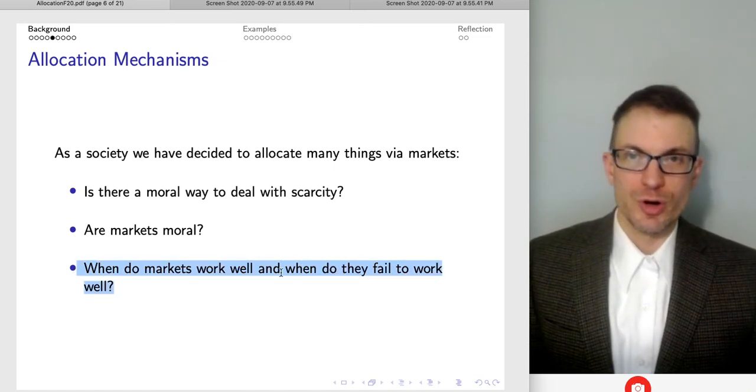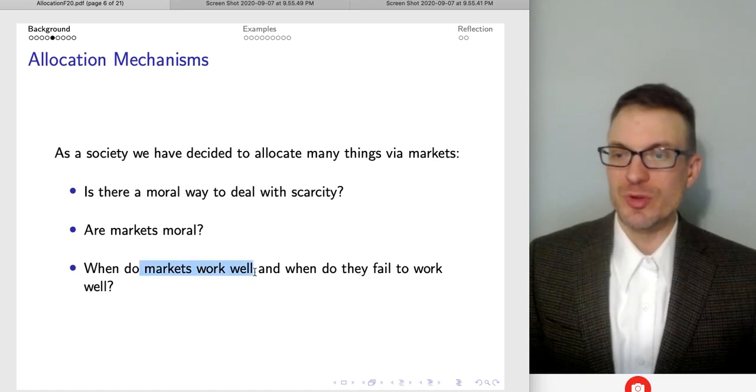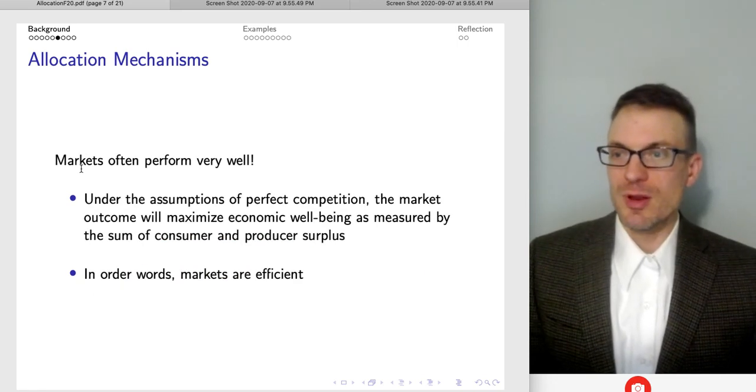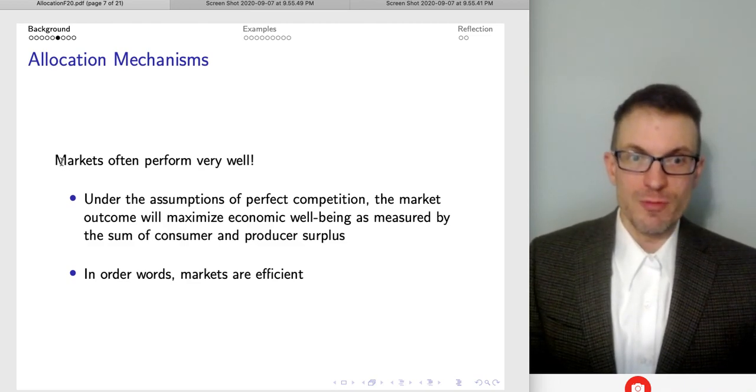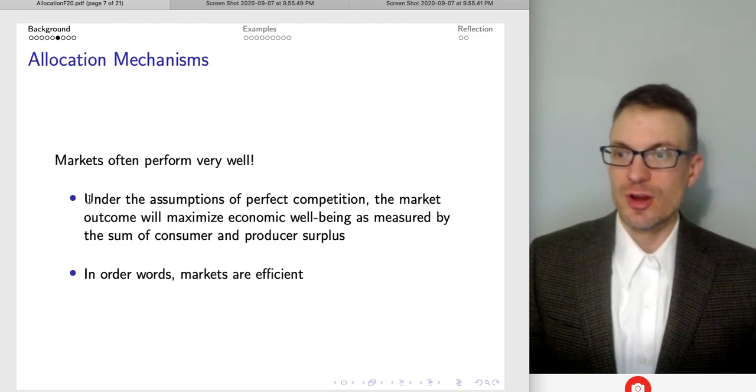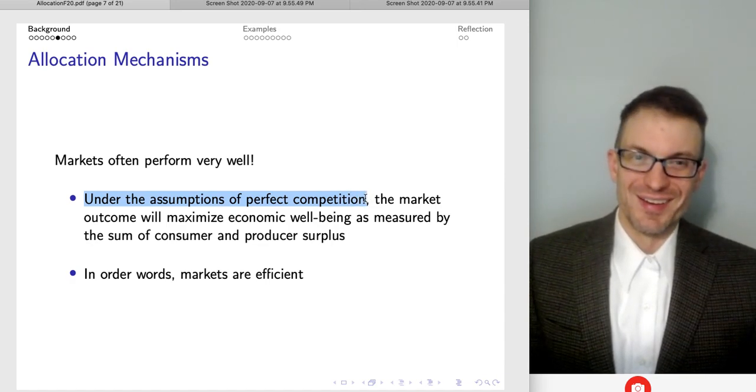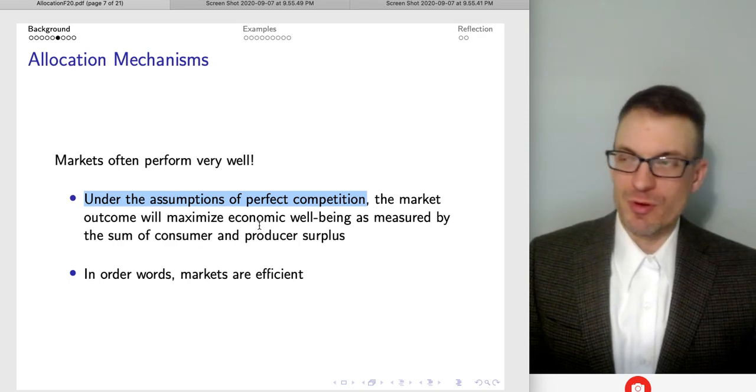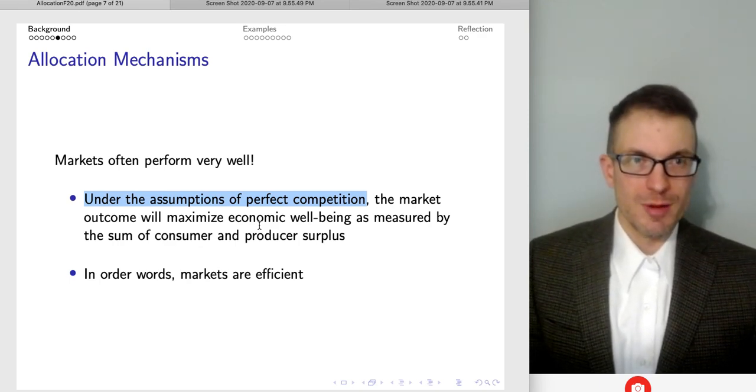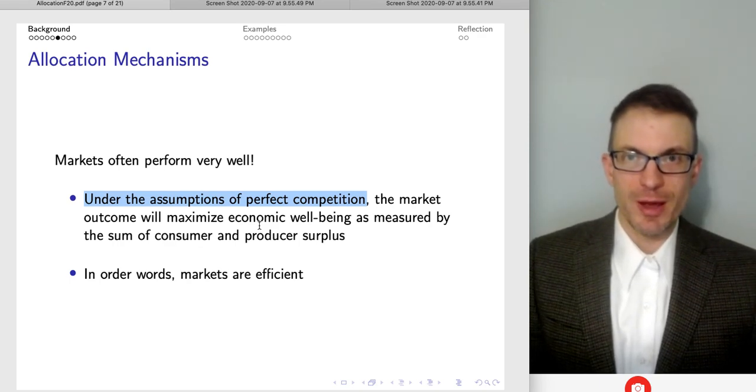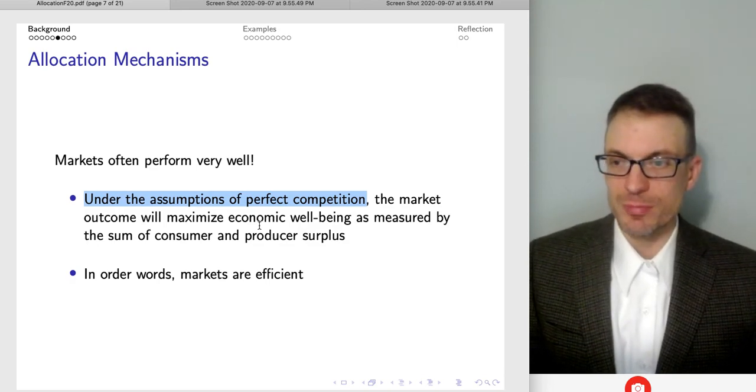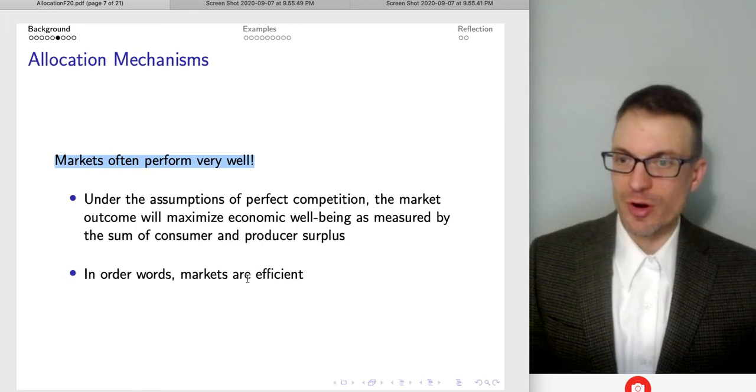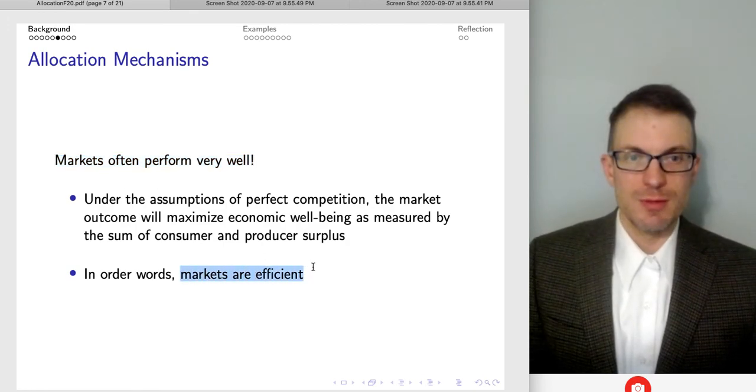Well, when markets work well, we say we've got efficiency. When they fail to work well, we've got inefficiency. Often markets perform very well. So when do they perform well? Well, under the assumptions of perfect competition. If we have a perfectly competitive market, we're going to maximize efficiency as measured by the sum of consumer and producer surplus. So markets tend to perform very well, meaning markets tend to be efficient.